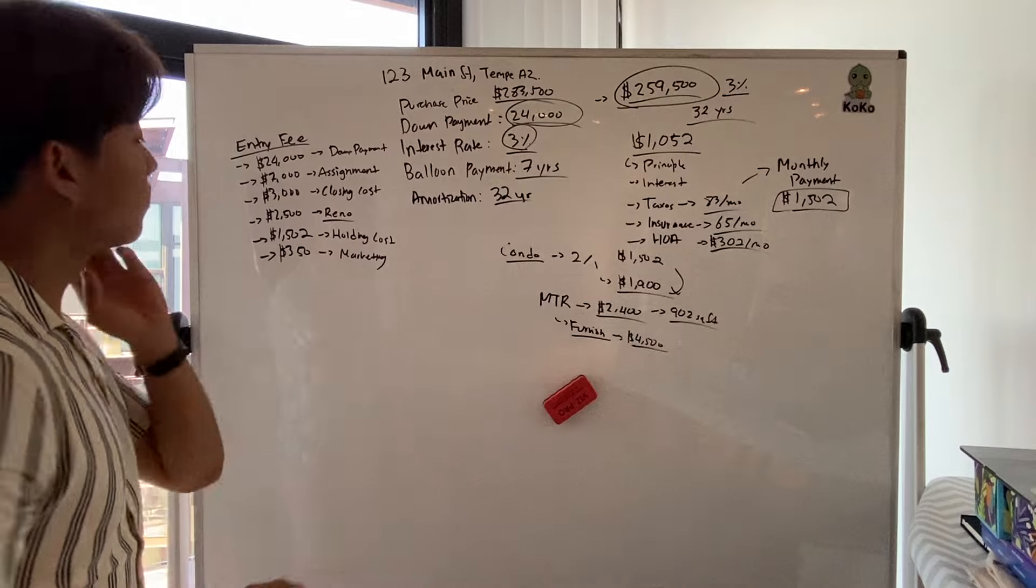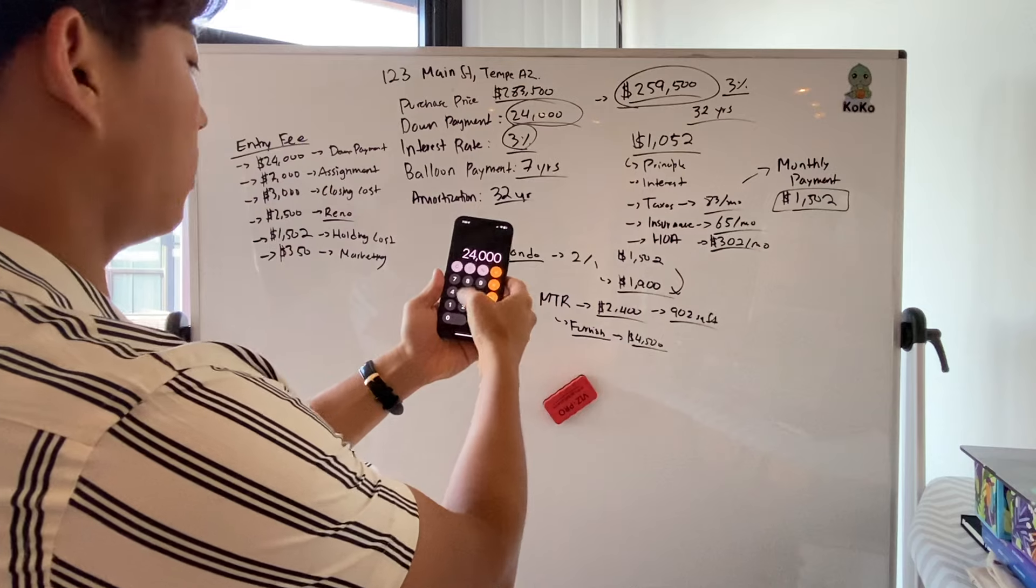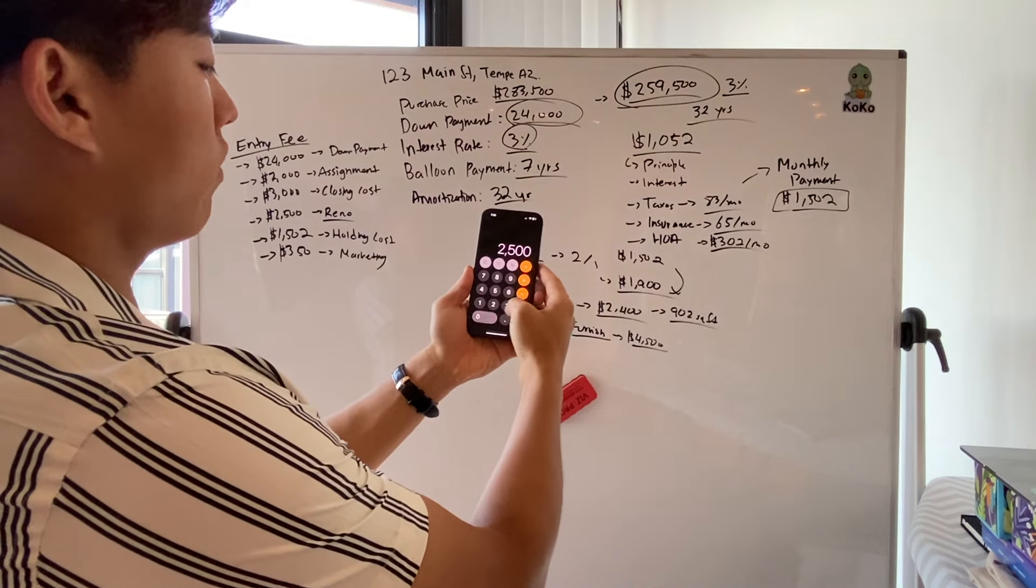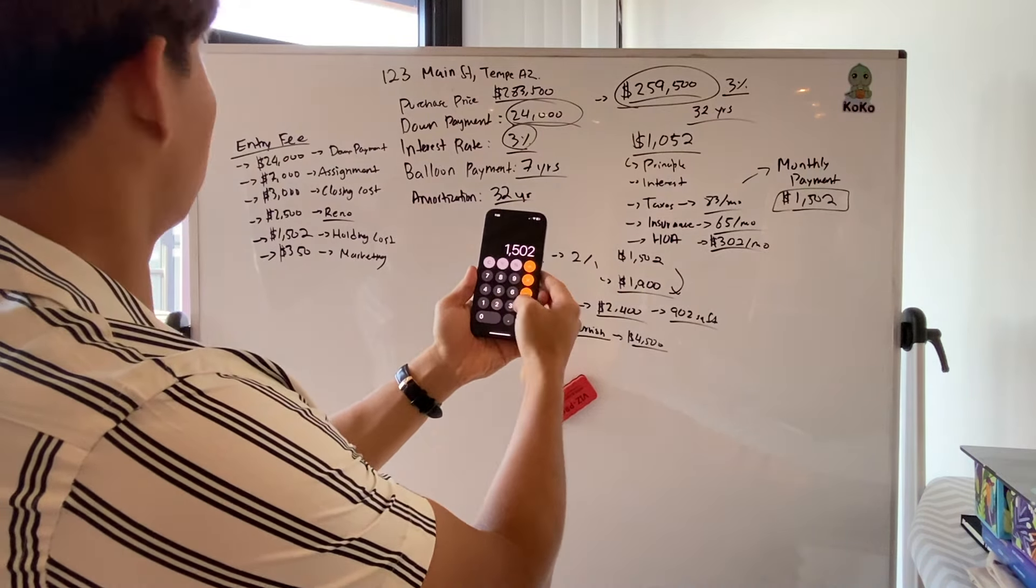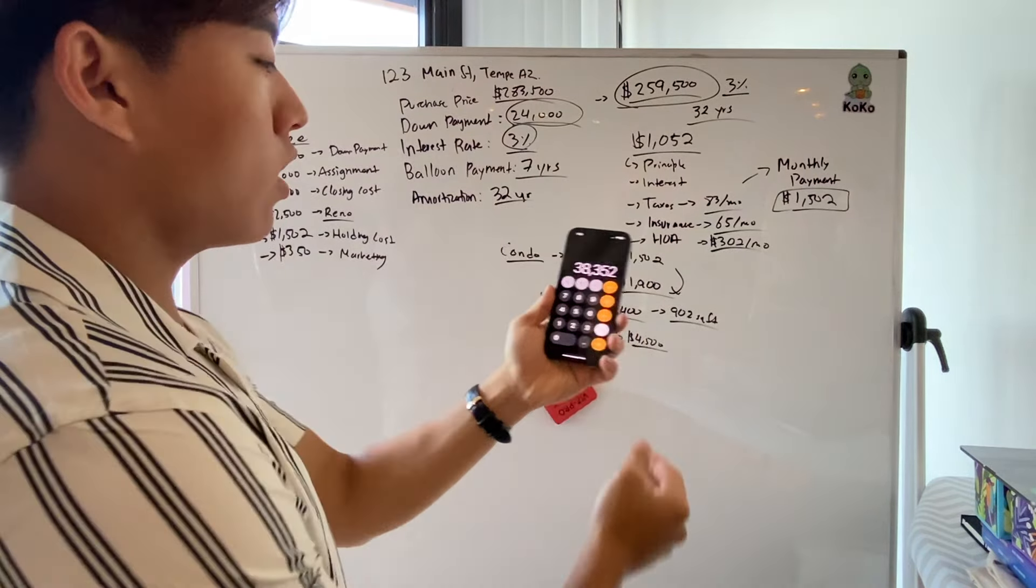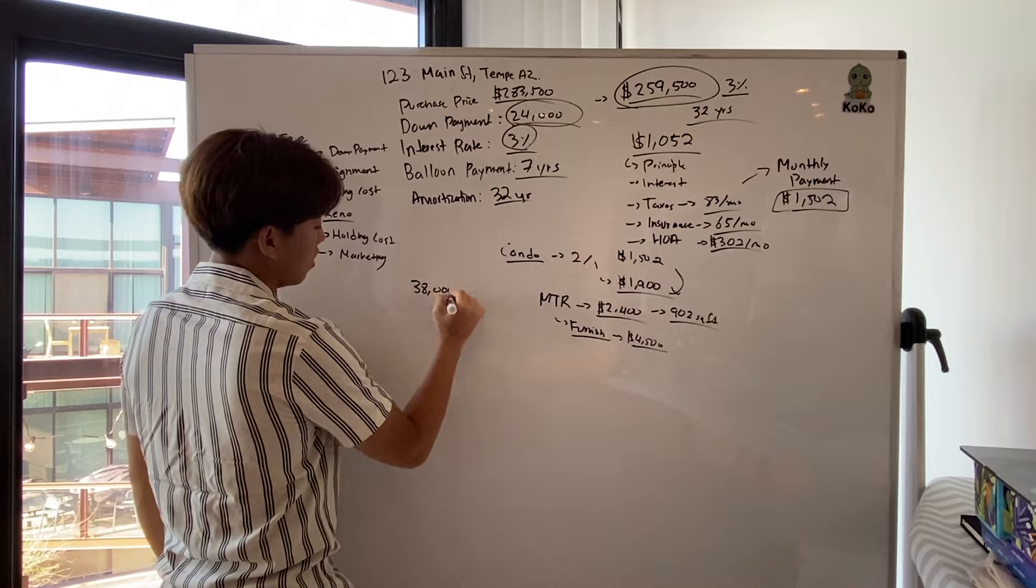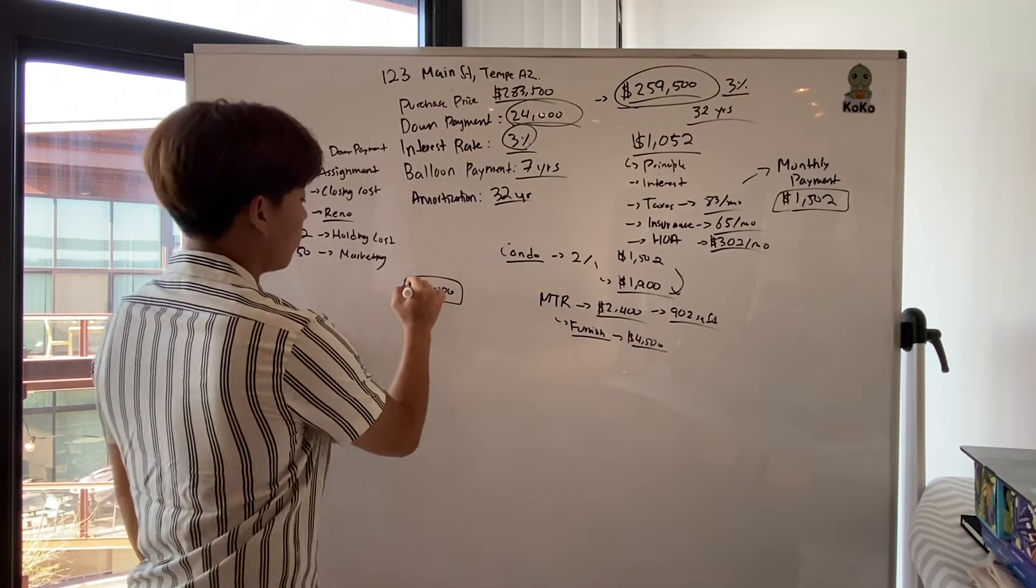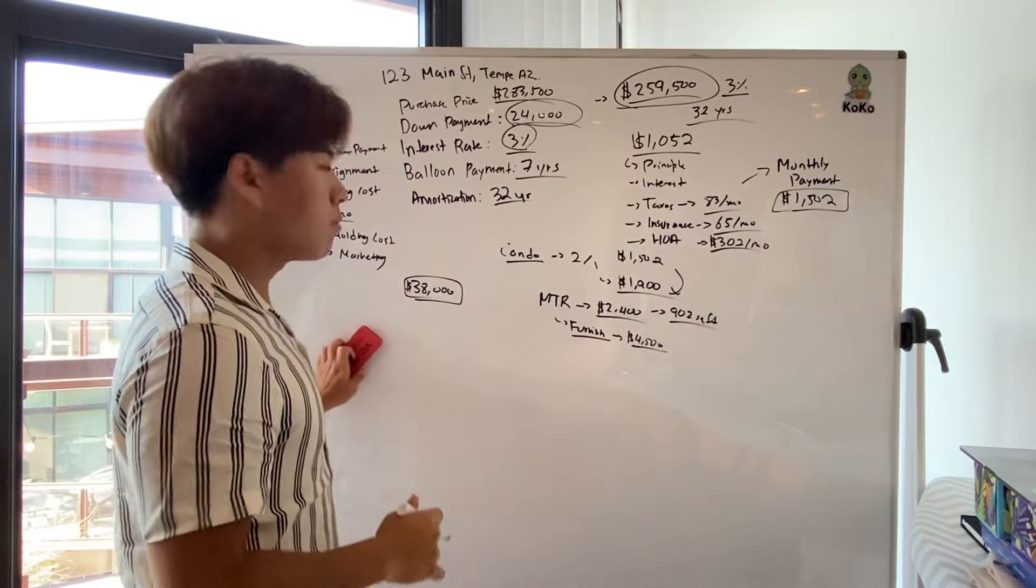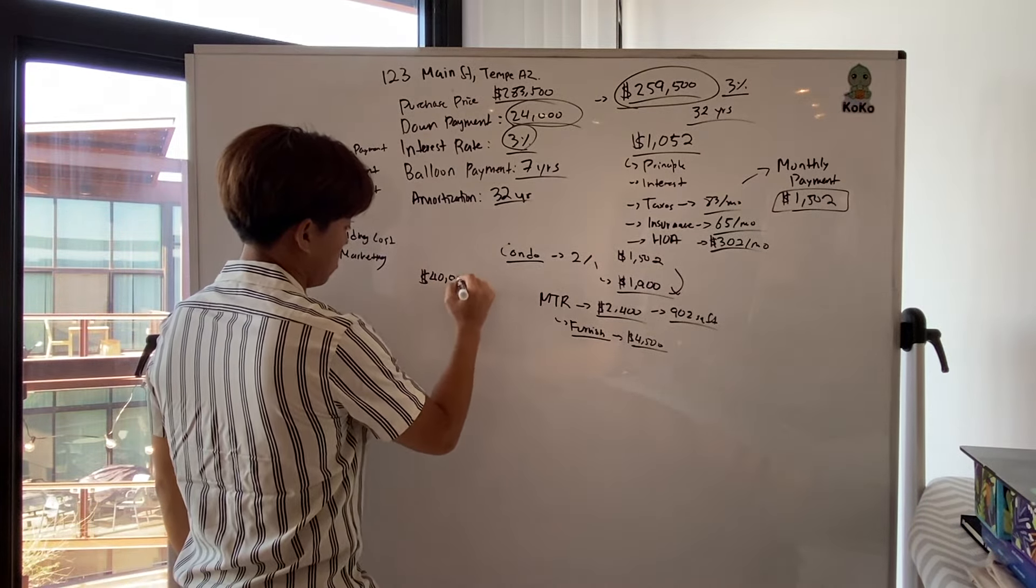So let's just add this all up. $24,000 plus $7,000 in assignment fee plus $3,000 in closing costs, $2,500 in renovation, $1,502 in holding costs, and then $350 in marketing. So we are at $38,000. We're just going to go for $38,000. So for me to get this house up and running, it's going to cost me around $38,000. And this is including every little item. And this is if it goes planned. So let's just put a budget for $40,000.